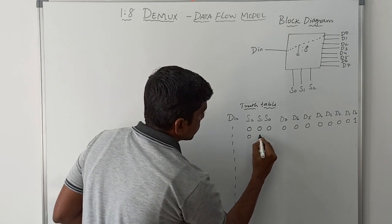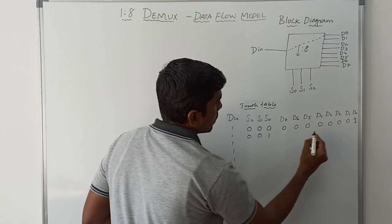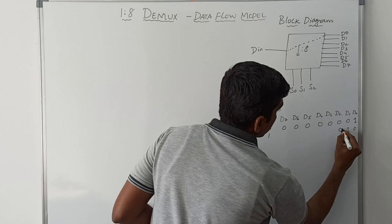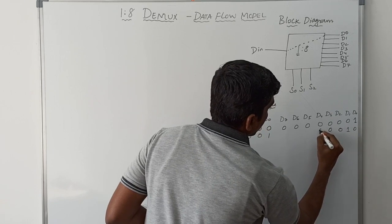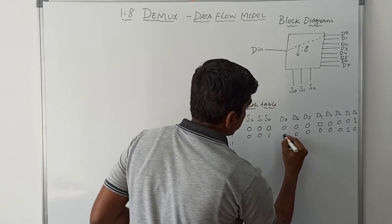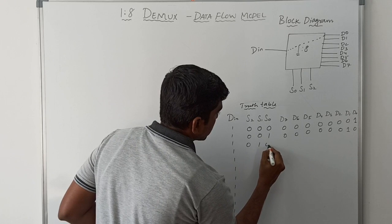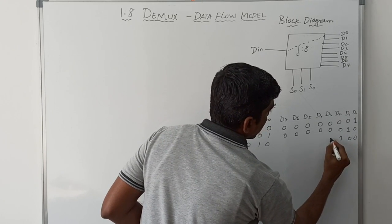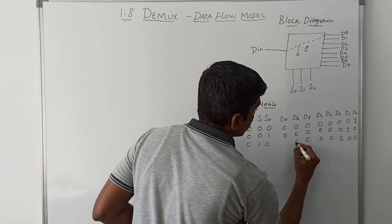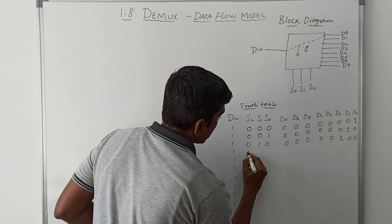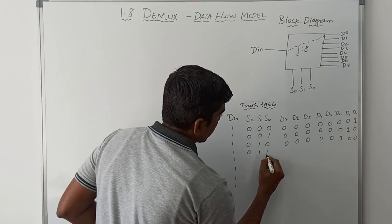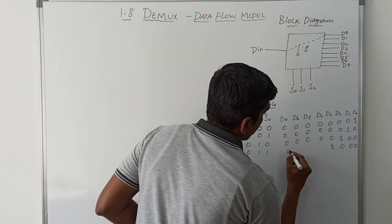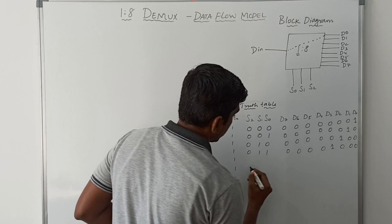The next combination is S2=0, S1=0, S0=1. In this case D1=1 and remaining bits go to 0. Next, S2=0, S1=1, S0=0: D2=1, remaining bits go to 0. Next, S2=0, S1=1, S0=1: D3=1, remaining bits go to 0.